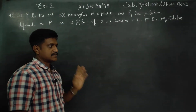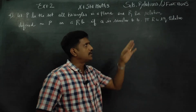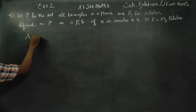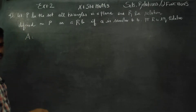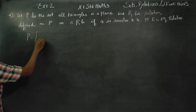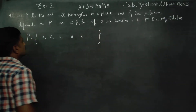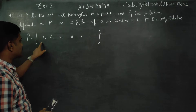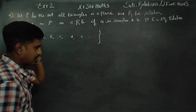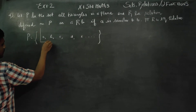Set of all triangles defined by R — it is an equivalence relation we need to prove. Let P be the set of all triangles. P contains triangles A, B, C, D, E and so on. So A is a triangle, B is a triangle, C is a triangle, D is a triangle, E is a triangle. This is all triangles represented. For better understanding, you can see that A is a triangle.